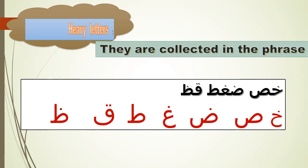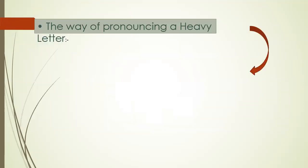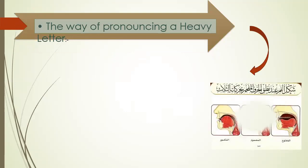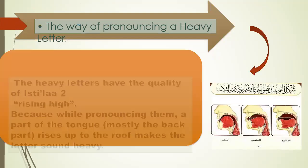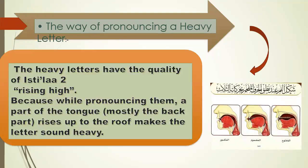Note it is khaa and saad, not khaa and saa. The heavy letters have the quality of ishti'la, meaning rising high. Because while pronouncing them, a part of the tongue — mostly the back part — rises up to the roof of the mouth.